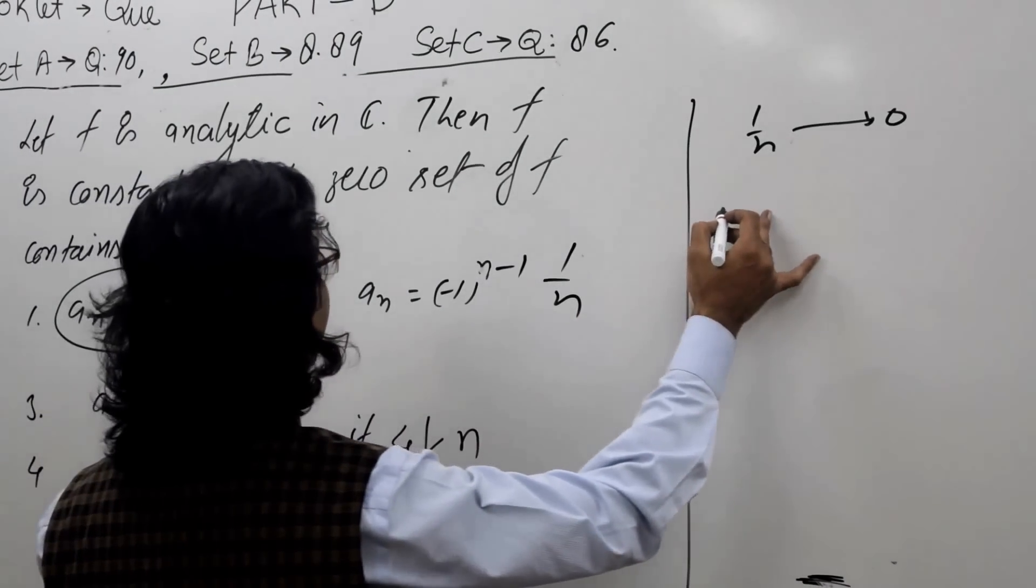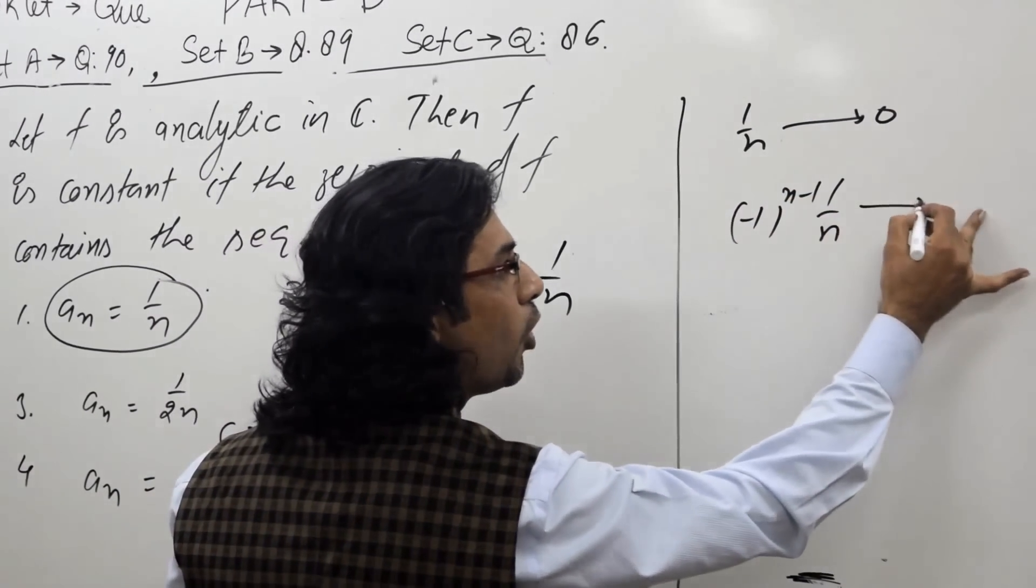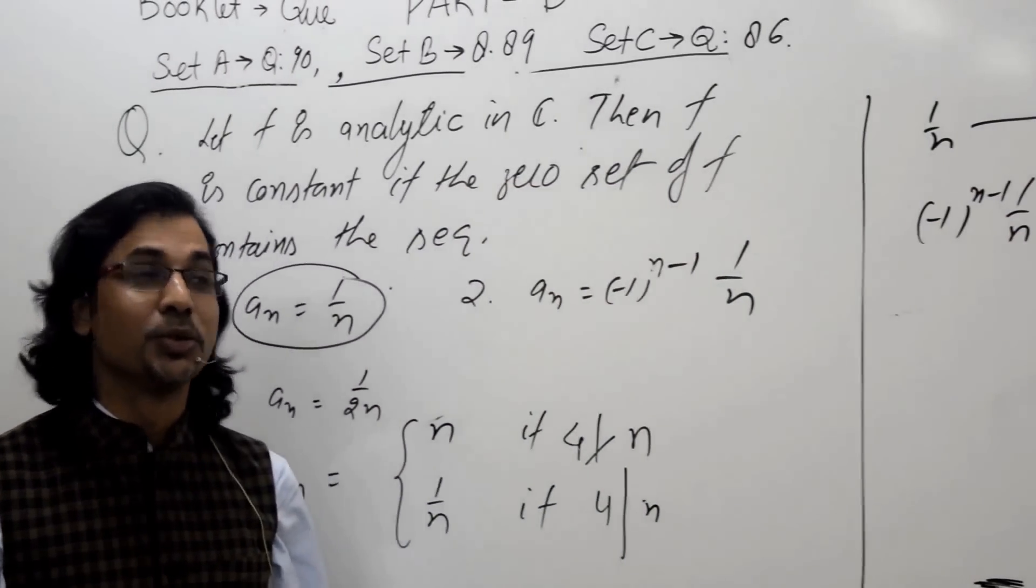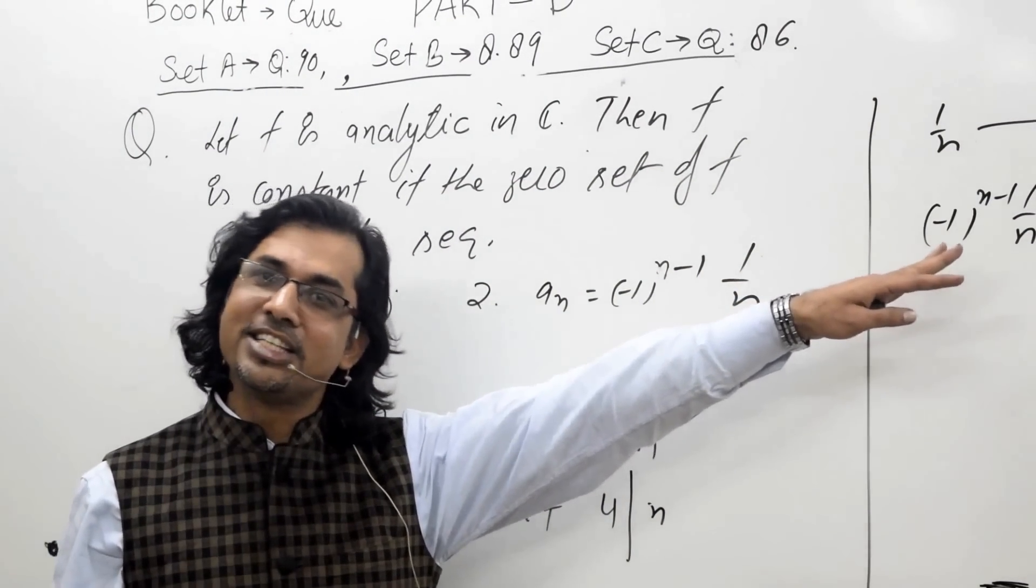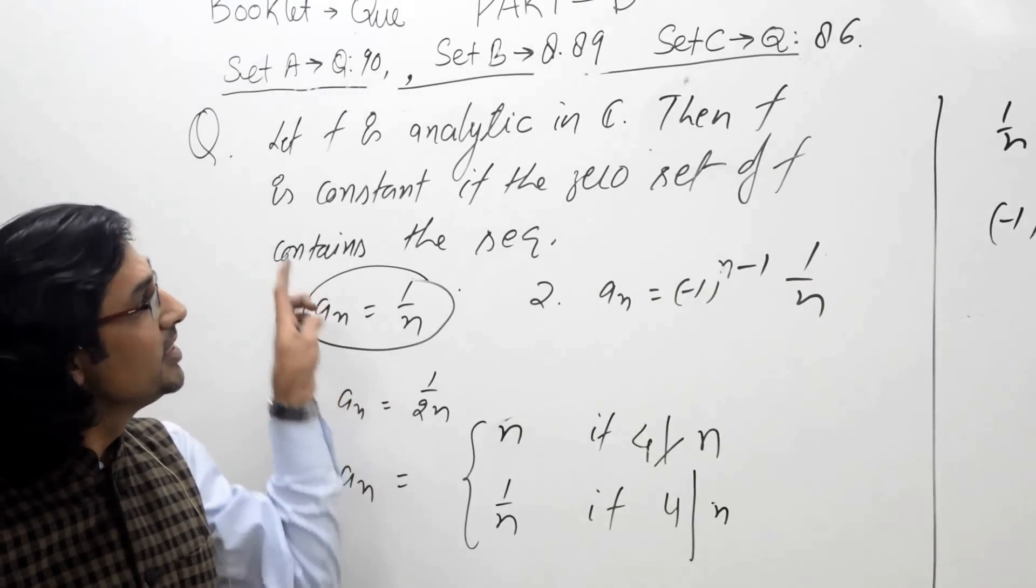Second, again (-1)^(n-1) * 1/n. This also tends to 0, so convergent, and hence 0 is a limit point. Function is identically 0, and hence constant.